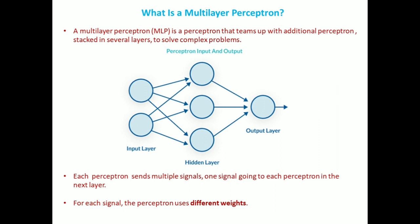Each perceptron in the first layer, also called the input layer, sends outputs to all the perceptrons in the next layer. This perceptron is going to send the output to all the perceptrons in the next layer — to this neuron, to this neuron, and to this neuron. The second input node also sends its output to all neurons in the hidden layer, and then all perceptrons in the hidden layer send output to the output layer.